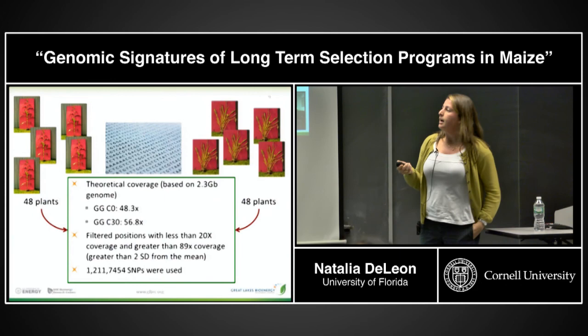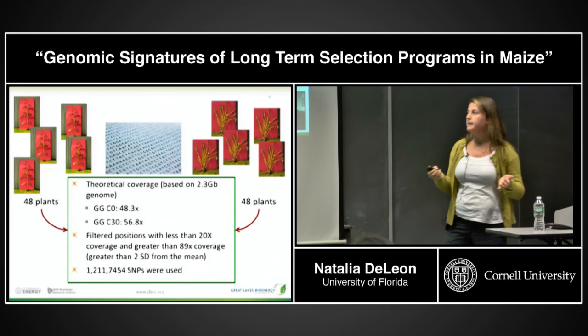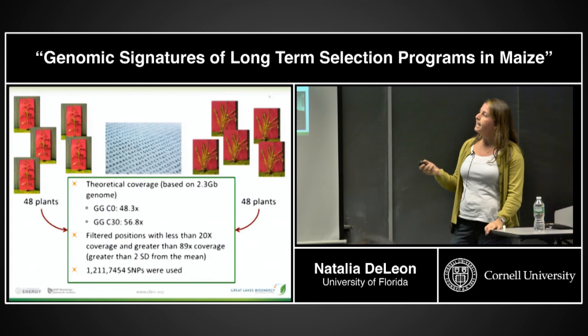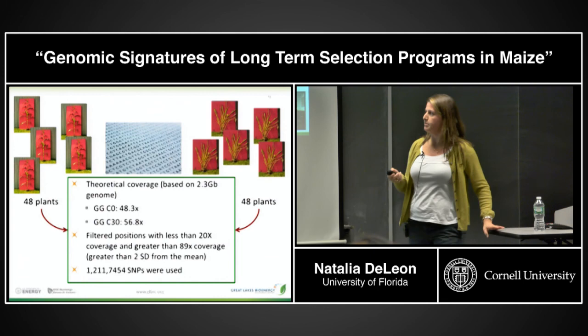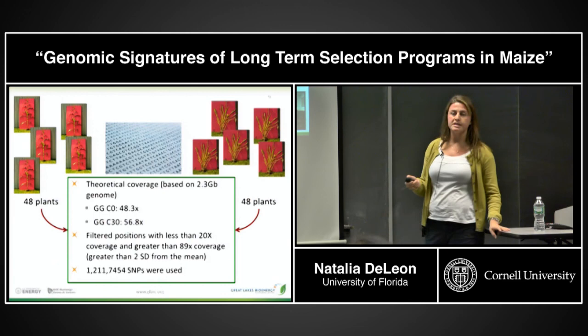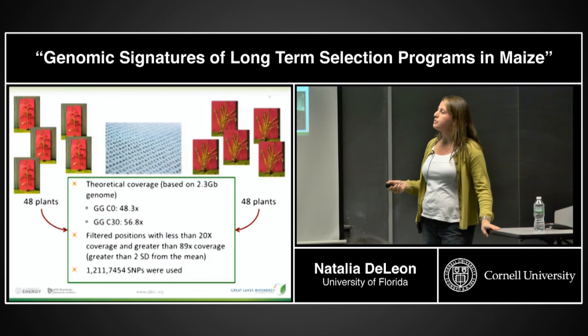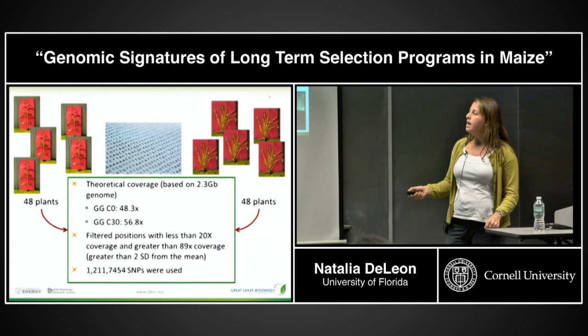A couple of years ago we wanted to use this framework to understand: given this tremendous phenotypic change, what can we learn about the genome? We took 48 plants from Cycle 0 and Cycle 30 and did deep sequencing. We had about 50X coverage of these bulks. After filtering — removing positions with less than 20X or more than 89% coverage — we ended up with a little more than one million SNPs for the analysis.